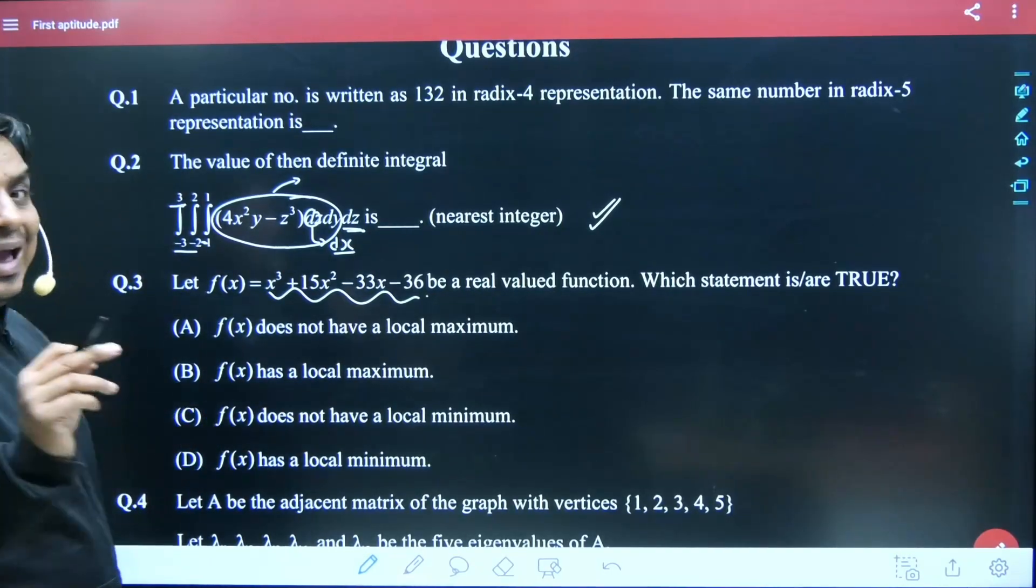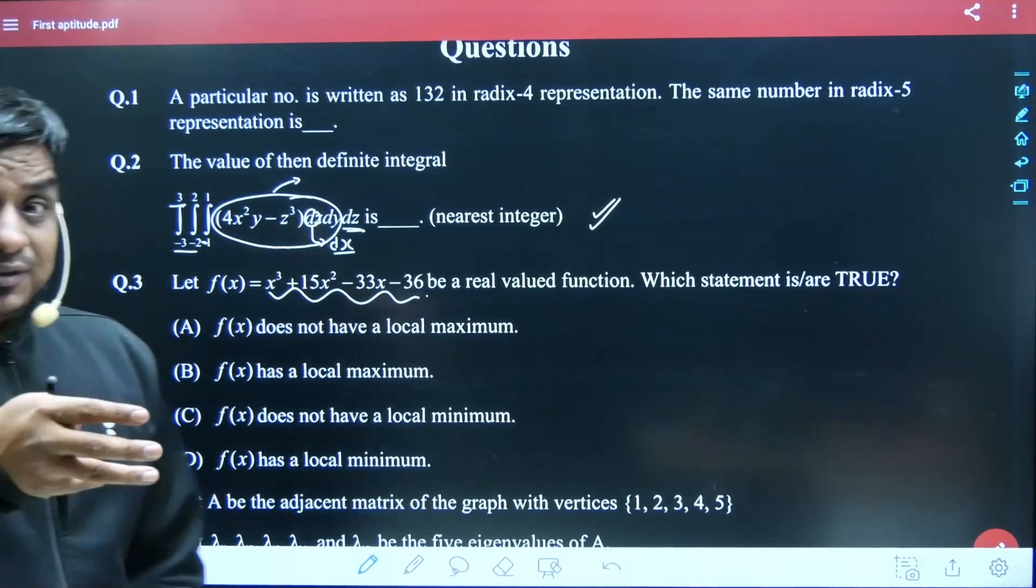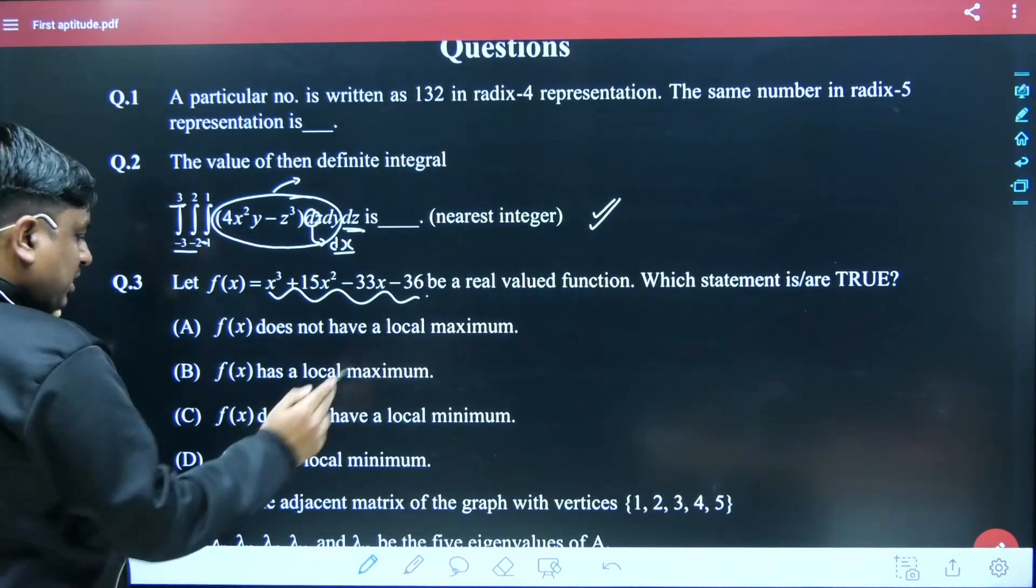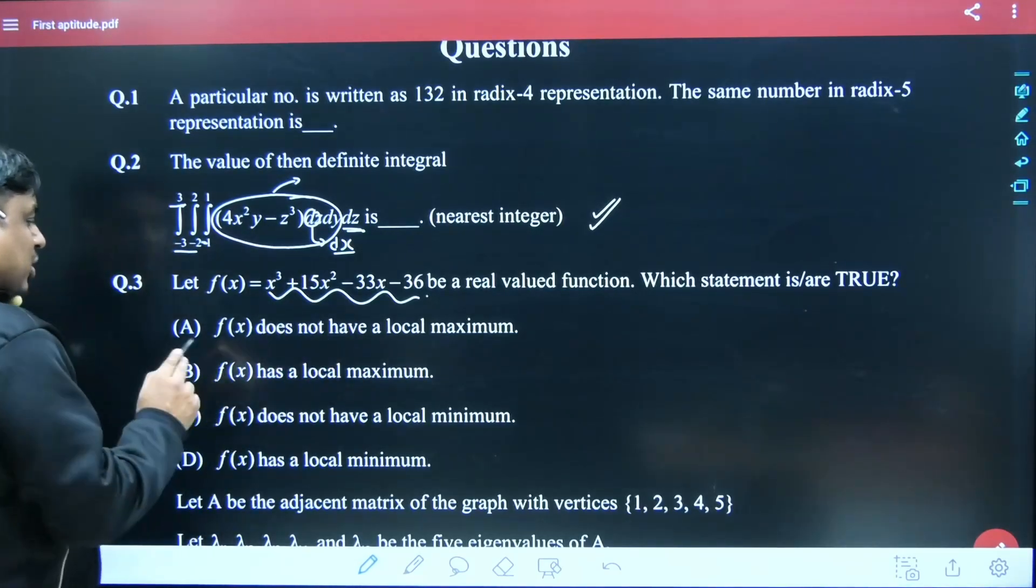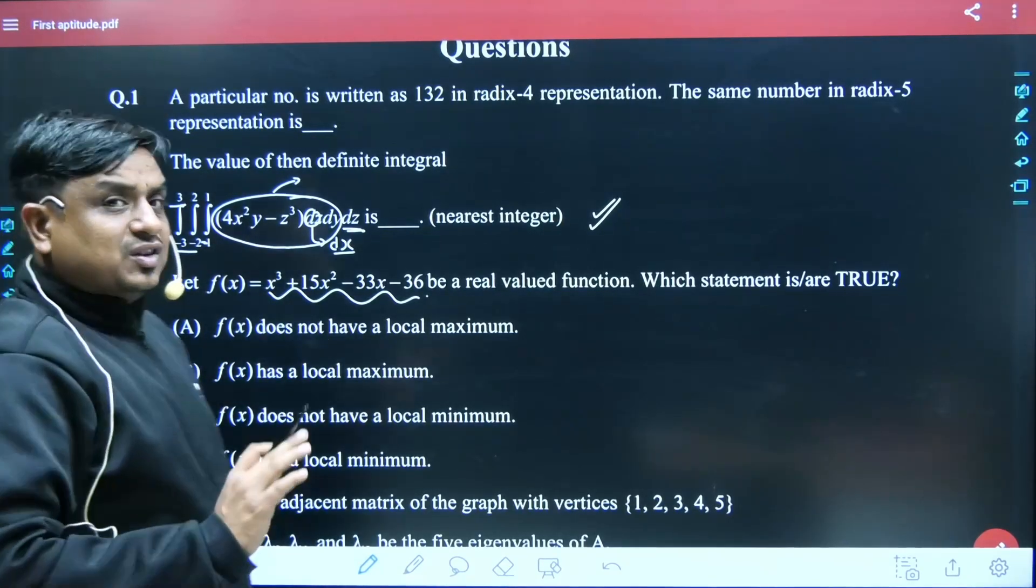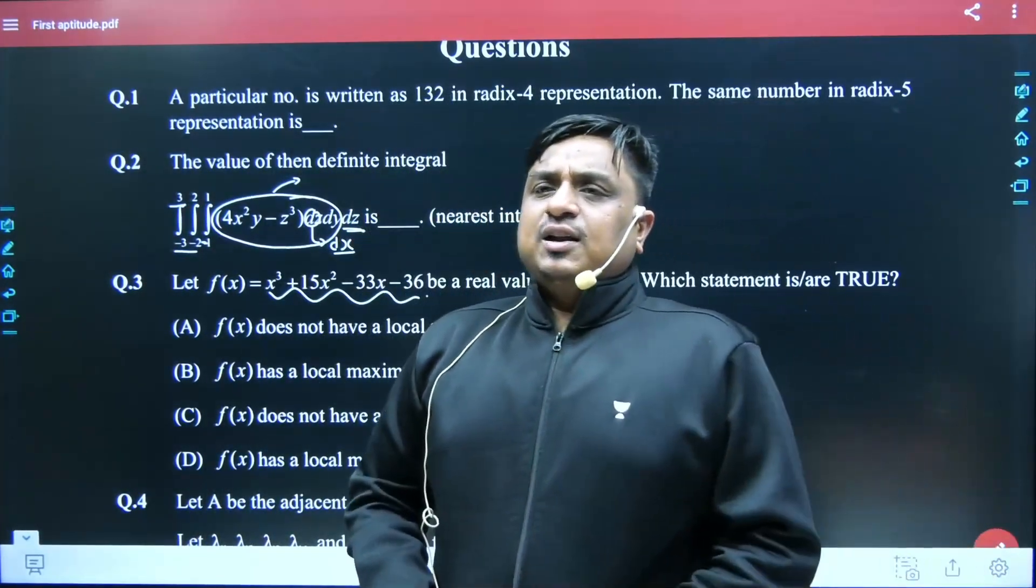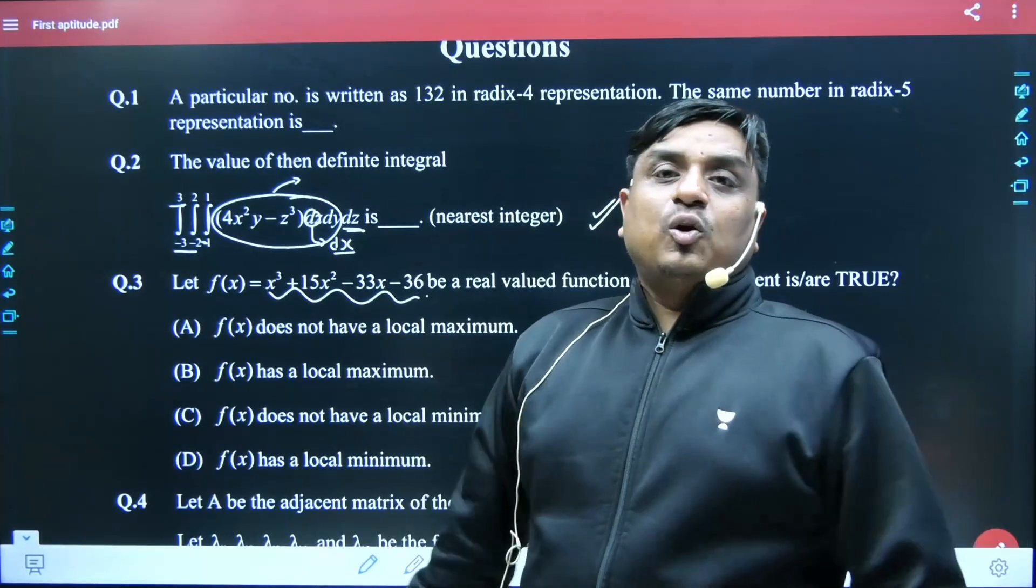Here, once you see the MSQ questions, few of the options were contradictory. f(x) has a local minima, f(x) does not have a local minima—out of four options, two were contradictory. I had seen at least in today's paper, if the MSQ has been framed, the options are contradictory.